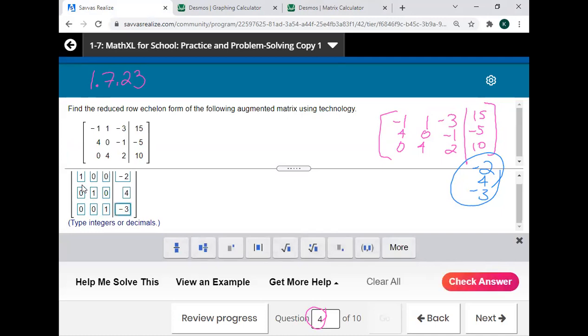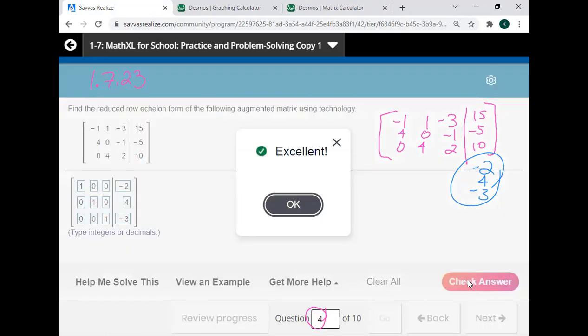That's reduced row echelon. X is negative two, Y is four, Z is negative three. Check it if we did it all right. Bam!